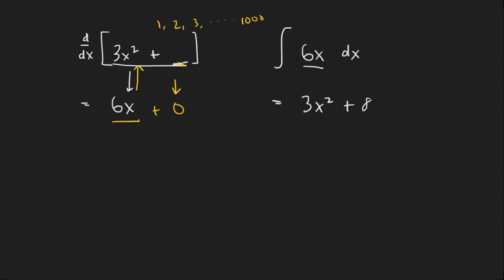So if we just write in a C for constant here we can see that the anti-derivative of 6x is going to be 3x squared plus this constant. So instead of writing plus 8 it'll actually be a plus C. So there's our anti-derivative.